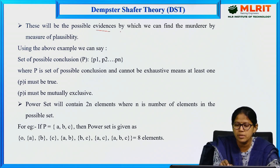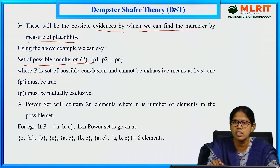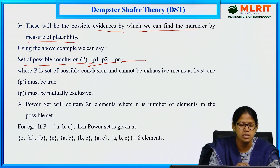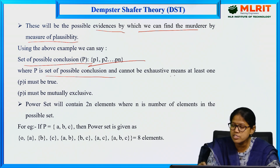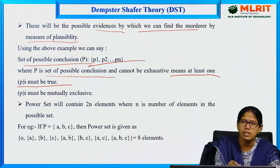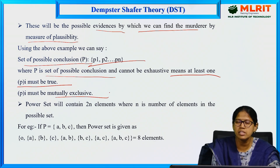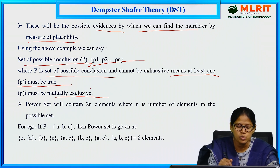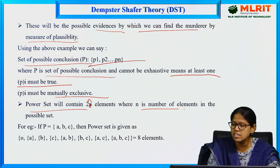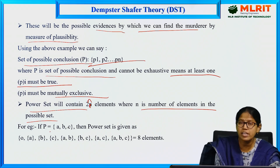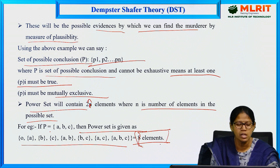These are the possible evidences by which we can find the murderer by measuring plausibility. The set of possible conclusions is P = {P1, P2, ..., Pn} possibilities, where P is the set of possible conclusions — either A, C, or D. It must be exhaustive (at least one must be true) and can be mutually exclusive. The power set contains 2 to the power of n elements, where n is the number of elements. For example, if P = {A, B, C}, the power set has 8 possible outcomes.